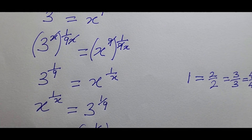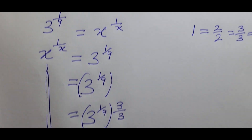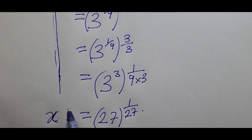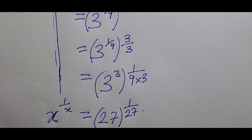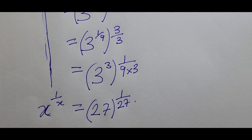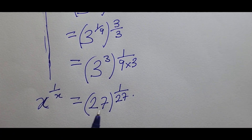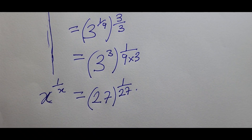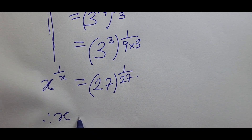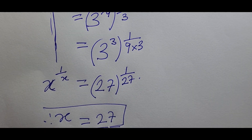Bringing down the left-hand side, we have x^(1/x) = 27^(1/27). Doing a simple comparison: on the left we have x^(1/x) and on the right we have 27^(1/27). Therefore x = 27.